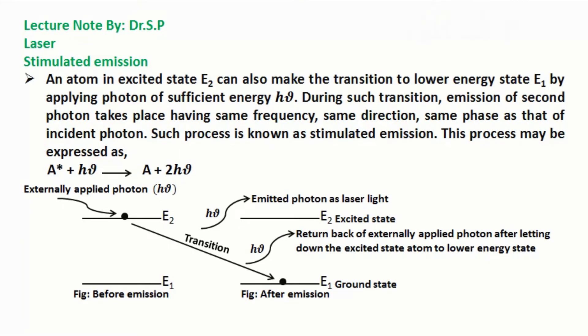Such process is known as stimulated emission. This process may be expressed as A* + hν → A + 2hν photons. Here is two photons because one is incident photon which is applied to let down the excited atom and next is emitted photon.